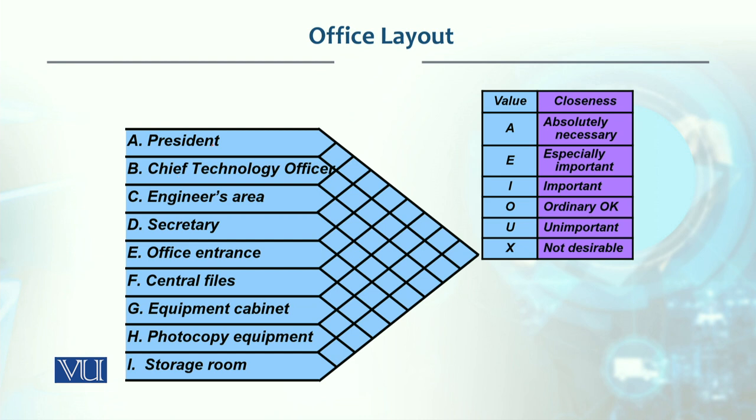The offices are: President, Chief Technology Officer, Engineers, Secretary, Office Entrance, Central Files, Equipment Cabinet, Photocopy Equipment, and Storage Room. These are the nine locations we need to place.